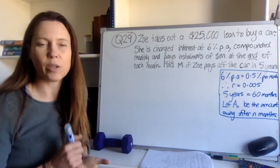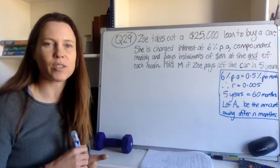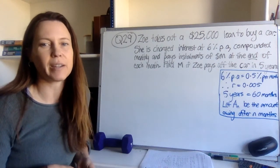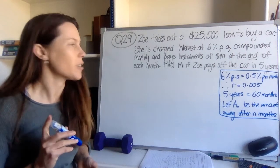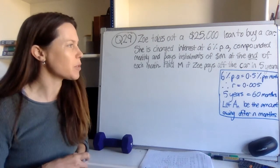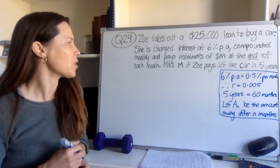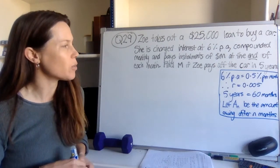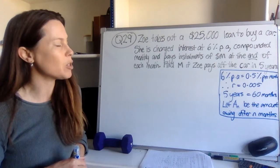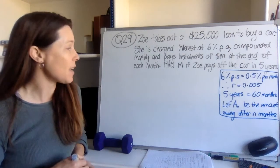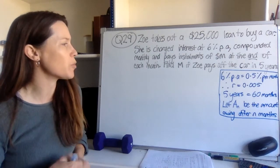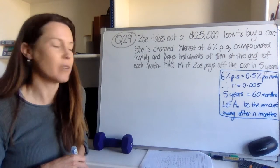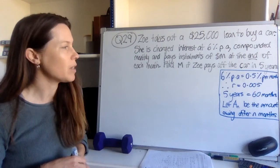Question 29. Zoe takes out a $25,000 loan to buy a car. She's charged interest at 6% per annum, compounded monthly, and she pays installments of M dollars at the end of each month. Find M if Zoe pays off the car in five years.